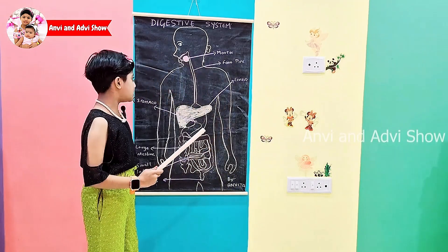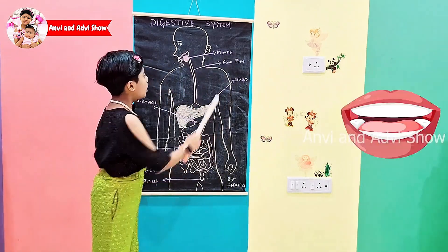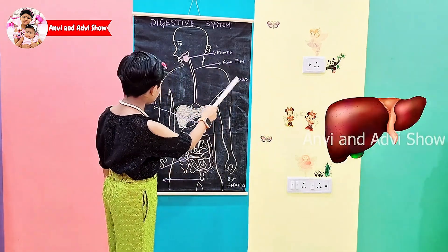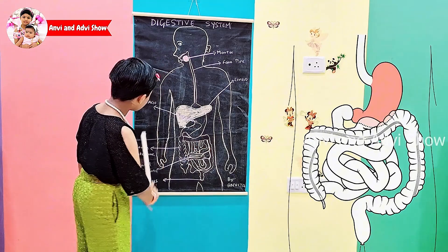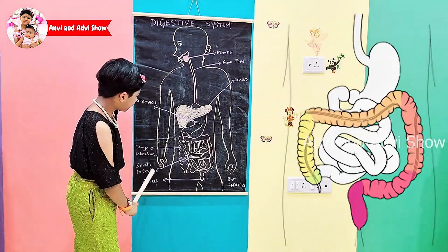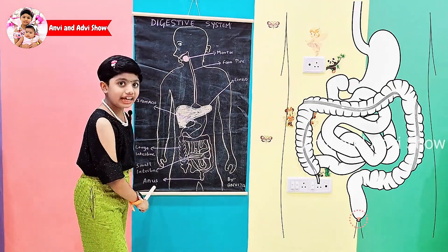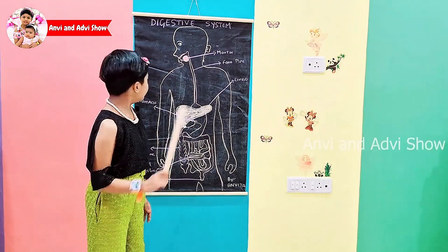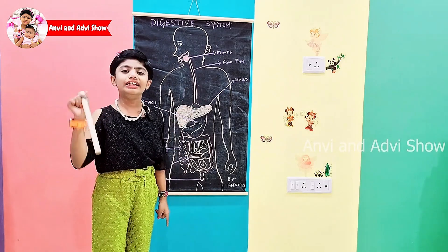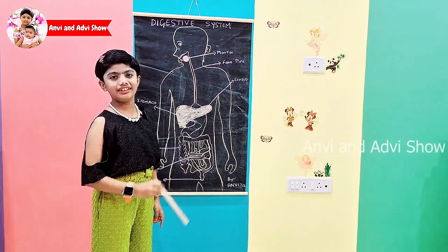The human digestive system consists of the mouth, the food pipe, the liver, the stomach, the small intestine, the large intestine, and the anus. Let's go through each part in detail.